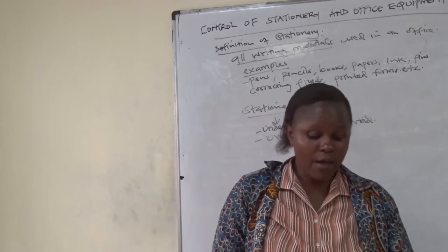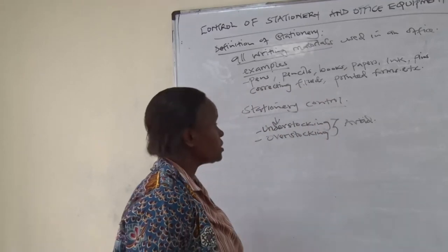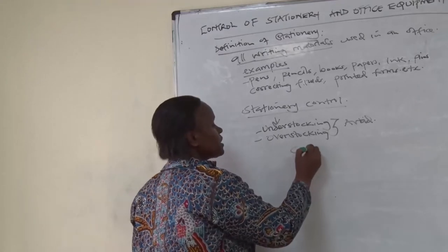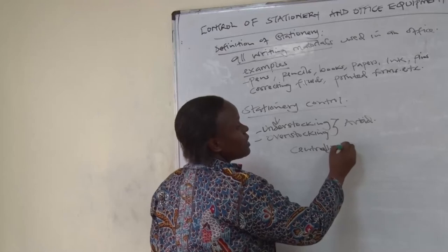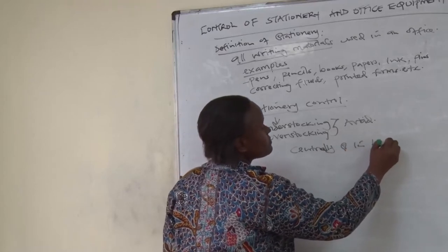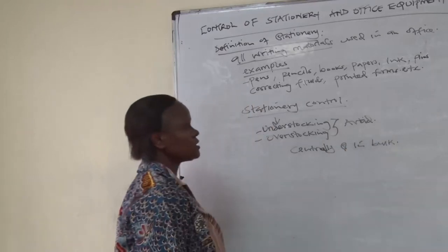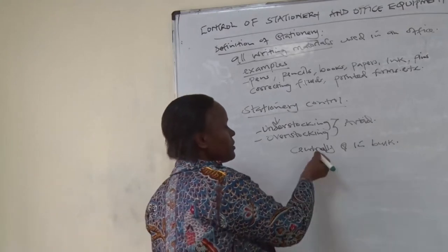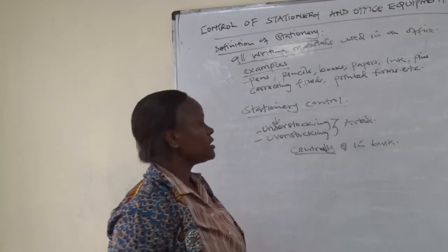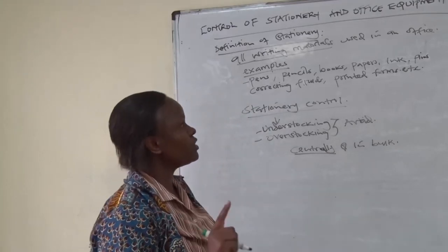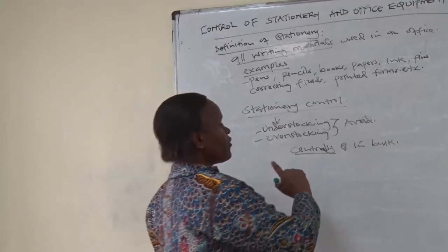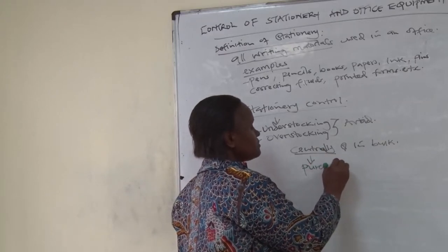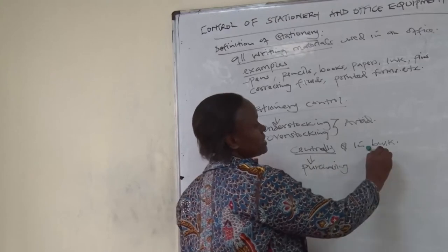The stationery should be purchased centrally. If you want to use stationery to cut the cost, you buy the stationery centrally. You have only one office for purchasing stationery, and you purchase in large quantities.